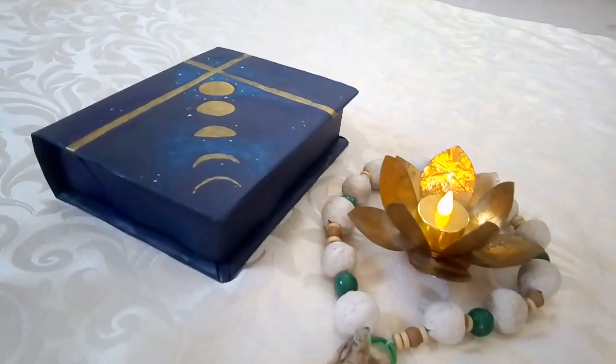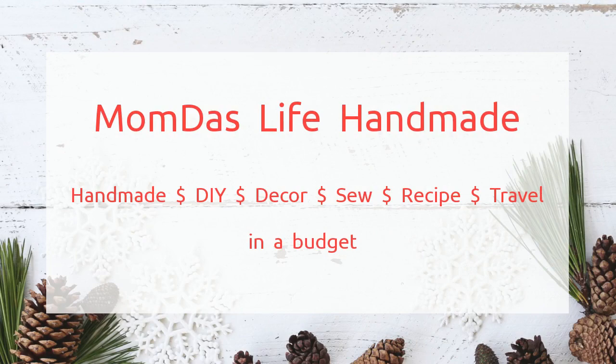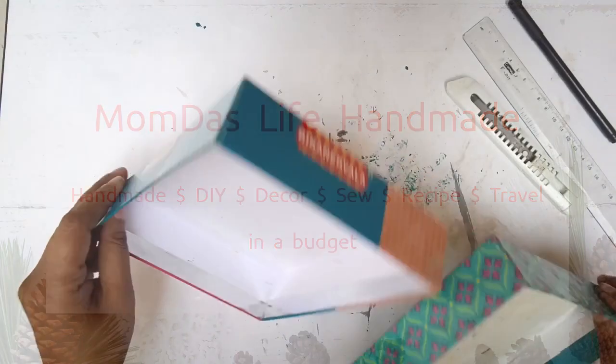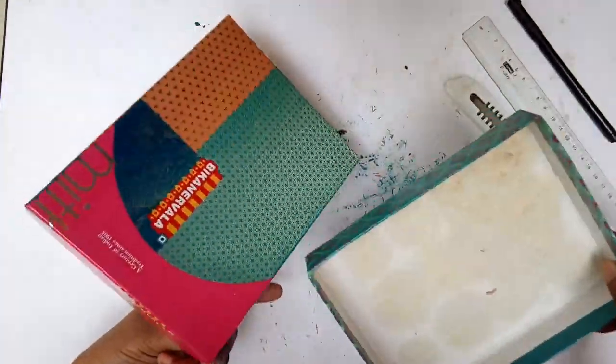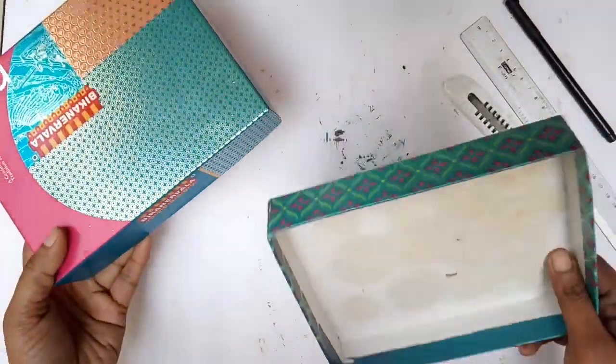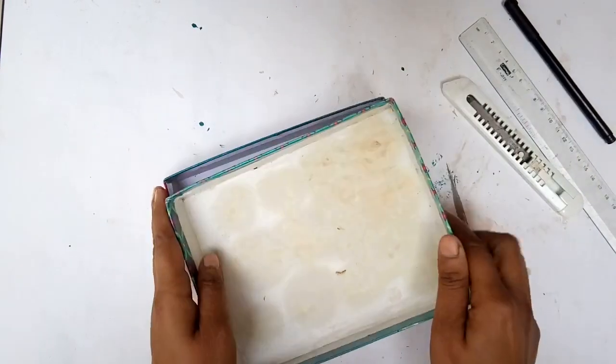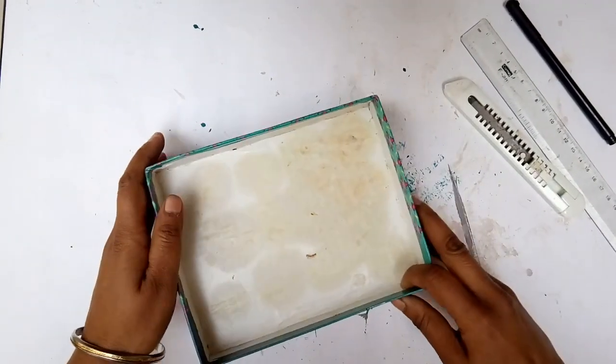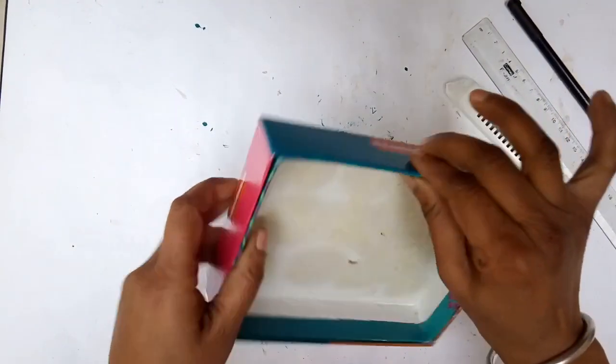For today's DIY I'm using these two boxes - they're for sweets. I've taken two that can snugly fit together. This makes it thicker and really sturdier.